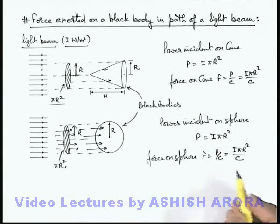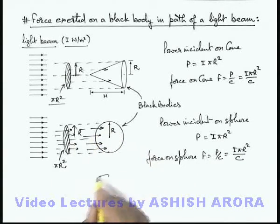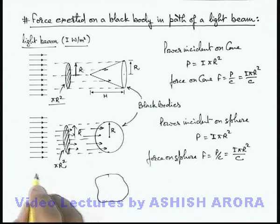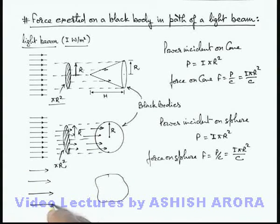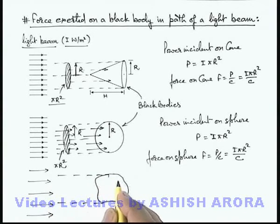That means in any case, if there is a black body surface placed in the path of a light beam, say if this is a random shape body and this is a light beam which is incident on it, then the beam cross section...